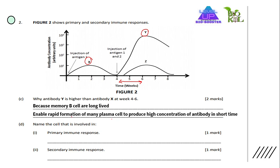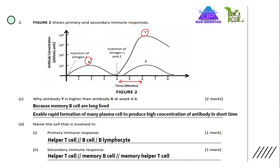Next question: Name the cells involved in primary immune response. The answer is helper T cell and B cell or B lymphocyte. Whereas for secondary immune response, the cells involved are helper T cell and memory B cell or memory helper T cell.